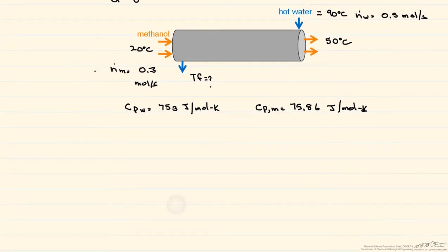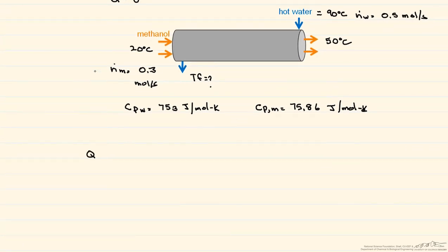We'll go back to the energy balance. We know because it's adiabatic that Q equals 0, and so that's going to be equal to the H of the water plus the H of the methanol. So that equals, we have our N of the water and our integral from our T final to our 90 degrees, because that's the initial temperature, our C sub P of the water, DT.